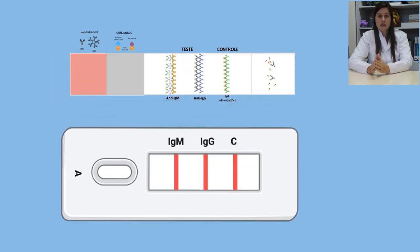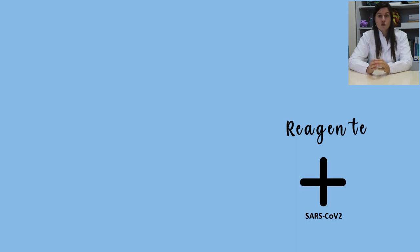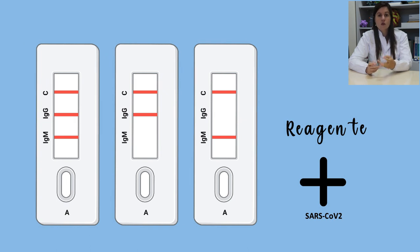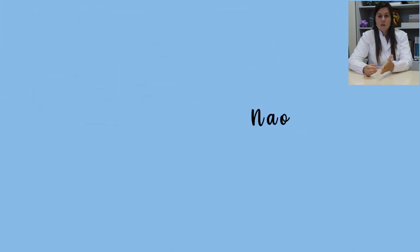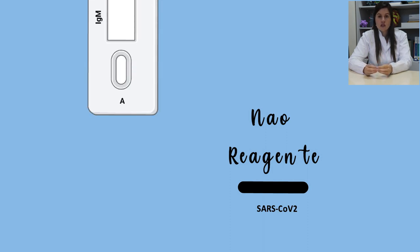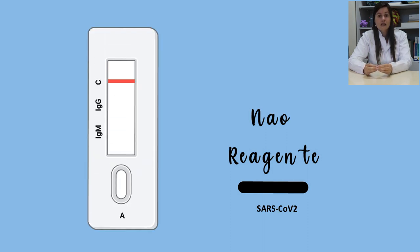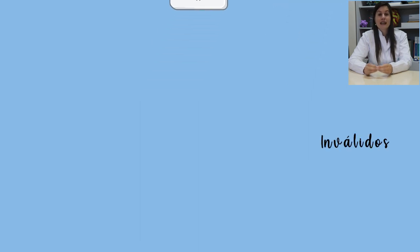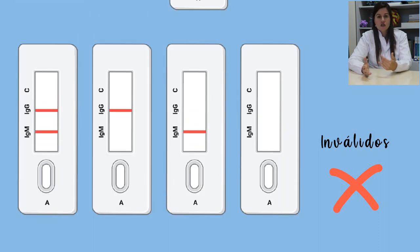A leitura do resultado é feita da seguinte forma. O teste é considerado reagente quando houver a formação de duas ou três linhas coloridas, ou seja, o indivíduo pode apresentar anticorpos do tipo IgM, apenas IgG ou os dois simultaneamente. A outra linha que tem que aparecer é na área controle. O teste será não reagente quando houver a formação de uma linha colorida somente na área de controle. E ele será considerado inválido quando não houver a linha colorida na área de controle, independente de haver bandas nas outras áreas.